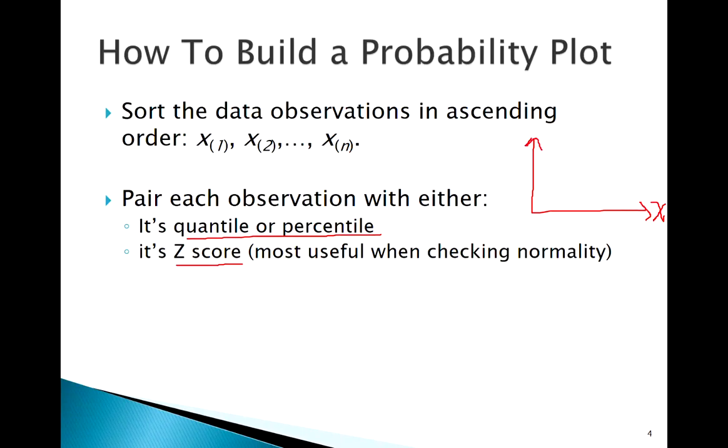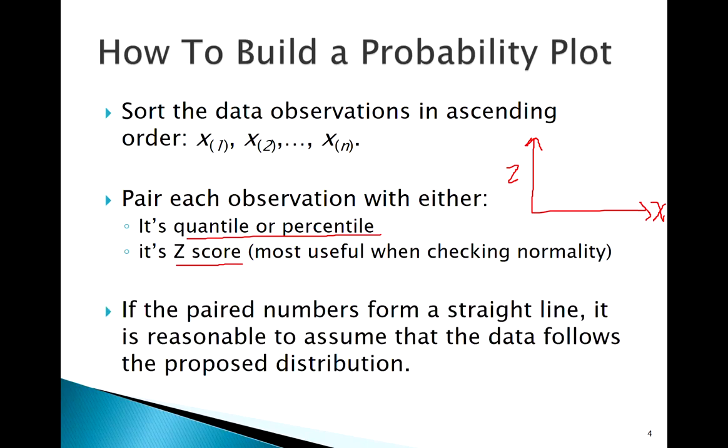And then on our y-axis plot it versus its z-score. So it's like a scatter plot of an observation versus its z-score. If these observations line up perfectly in a straight line, that line being y equals x, kind of a 45-degree line, that tells us that our data fits a normal distribution pretty well.